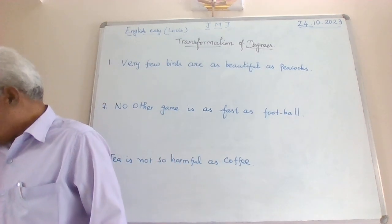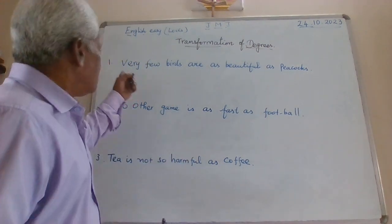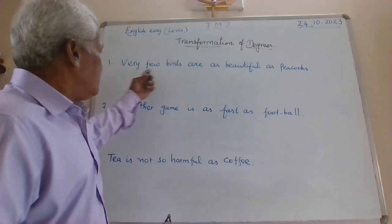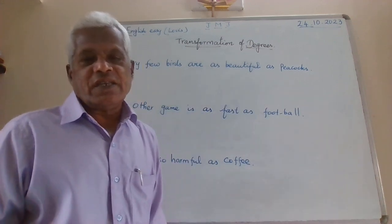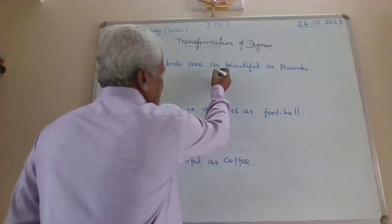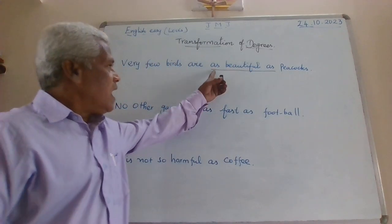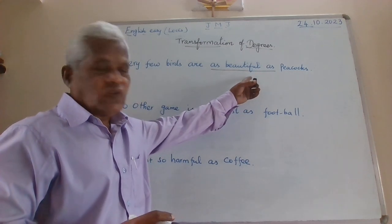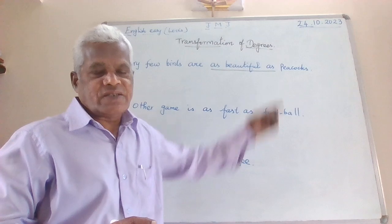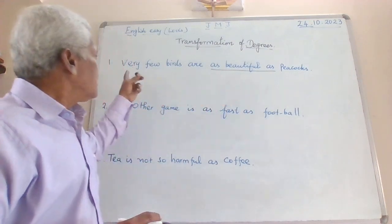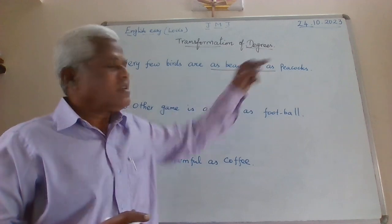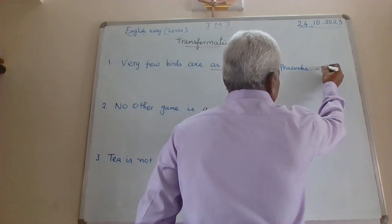The first sentence is: 'Very few birds are as beautiful as peacocks.' What is the degree here? This is positive degree. How can you tell? Because the formation is 'as beautiful as' — as, adjective, as. So 'beautiful' is the adjective and the positive degree formation is 'as beautiful as.' We are comparing peacocks with other birds that are as beautiful as peacocks.